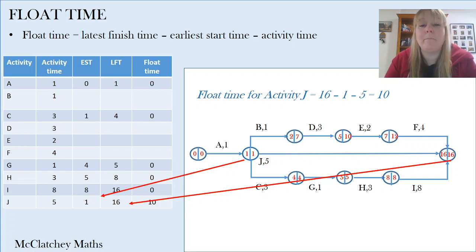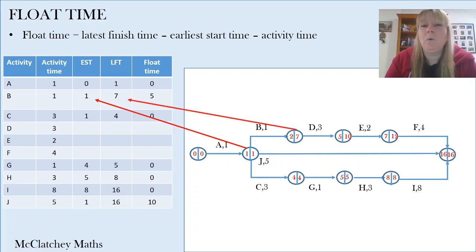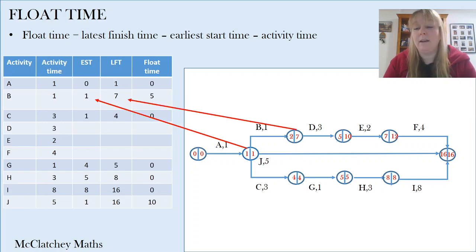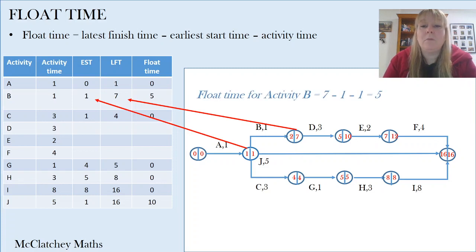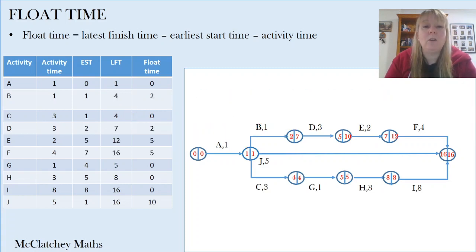Let's look at our top pathway — the pathway of making my coffee. For activity B, the earliest start time is 1 minute, and I pull the latest finish time from the right-hand side of the vertex after activity B. The calculation is: 7 take away 1 take away 1 gives me 5 minutes of float time. And so on for the remaining processes along that top activity.